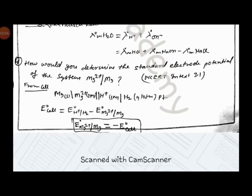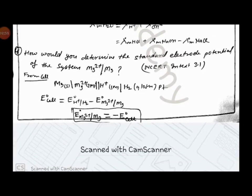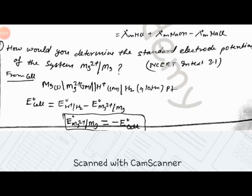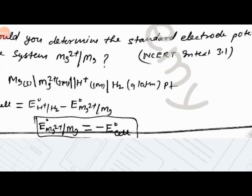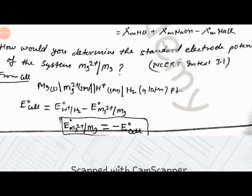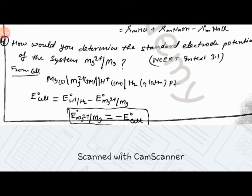We represent the cell as: Mg solid slash Mg 2 plus 1 molar solution, double slash for salt bridge, then H plus 2 molar with H2 at 1 atmospheric pressure with Pt electrode.